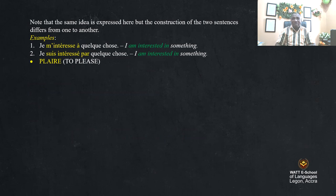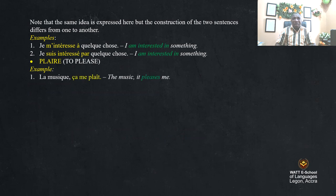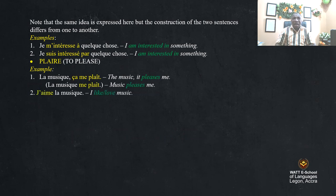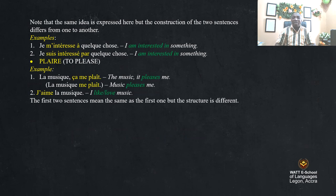The verb 'plaire' means to please. For example, 'la musique, ça me plaît' and 'la musique me plaît' both mean music pleases me. This is equivalent to 'j'aime la musique' — I like or love music. The meaning is the same, but the structure differs.